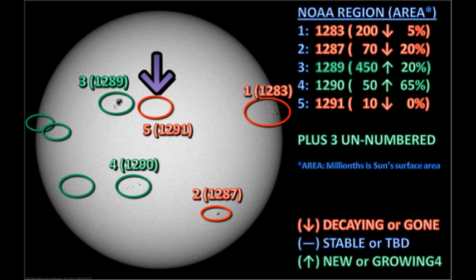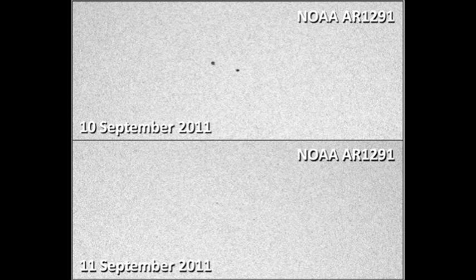There is a newly numbered region near disk center in the north, region 1291. I pointed this region out yesterday when it had two medium-sized spots. However, today the spots have decayed quite significantly, and their total area is only a ten millionths of the solar disk.